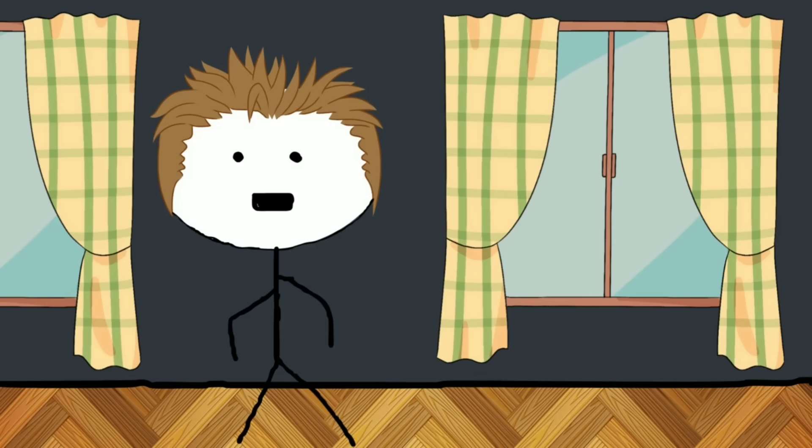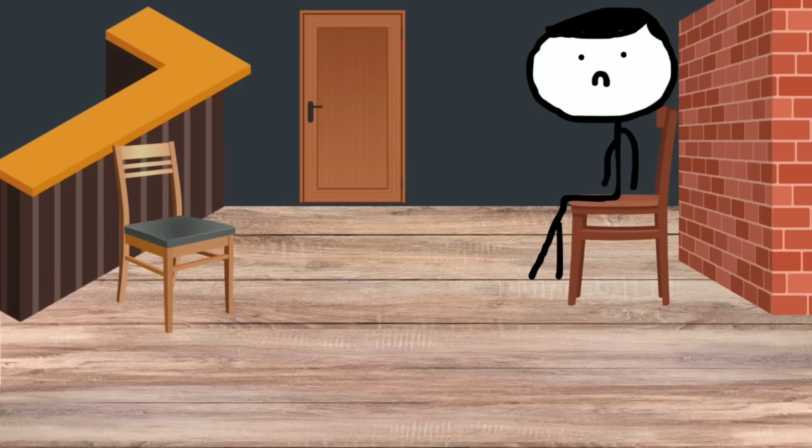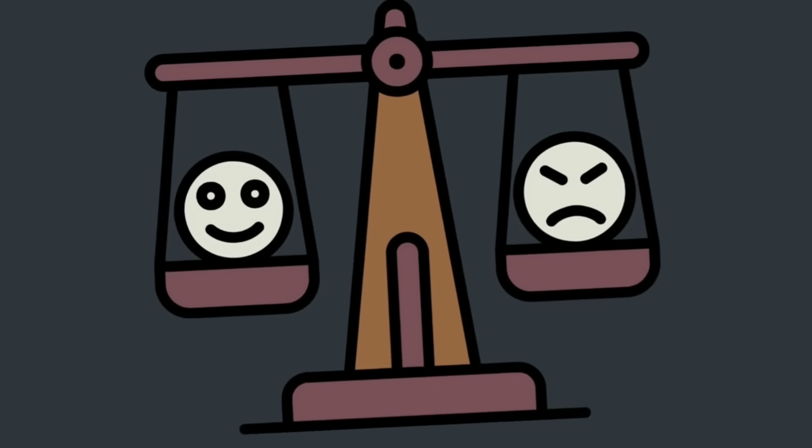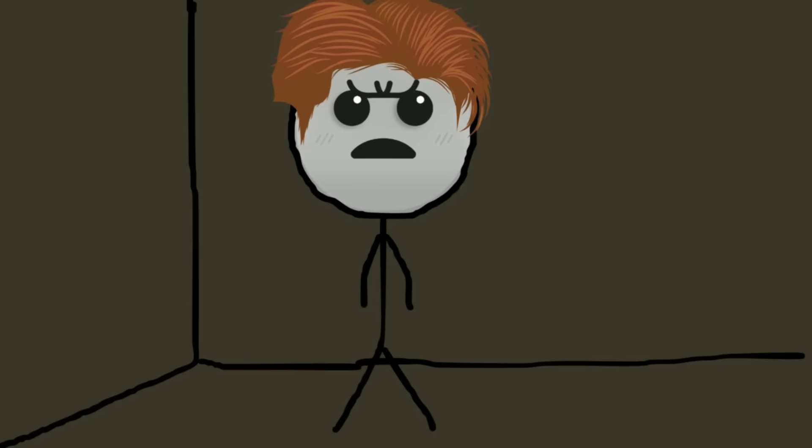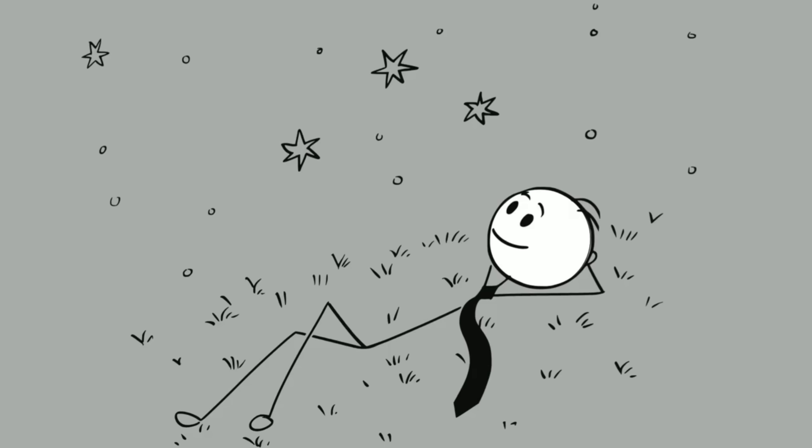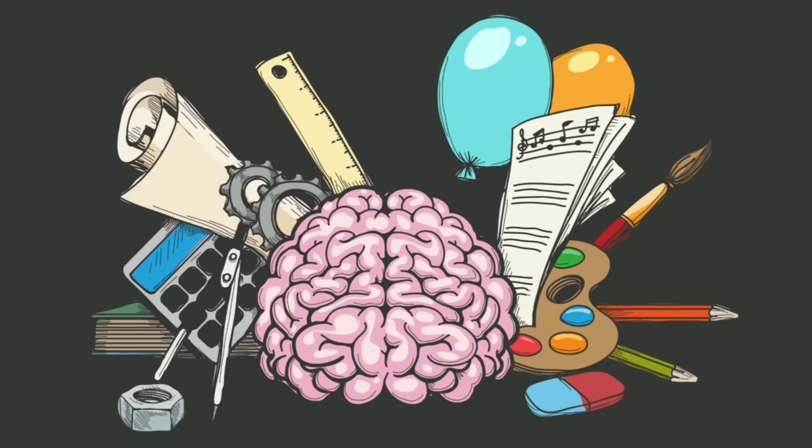Loneliness weakens this area's activity, making it harder for you to think clearly or control negative thoughts. That's why lonely people often feel mentally foggy or emotionally unstable. It's not just in their head metaphorically, it's in their head literally. Even your brain's default mode network, the system that activates when you're not focused on a task, like when you're daydreaming or reflecting, starts behaving differently.